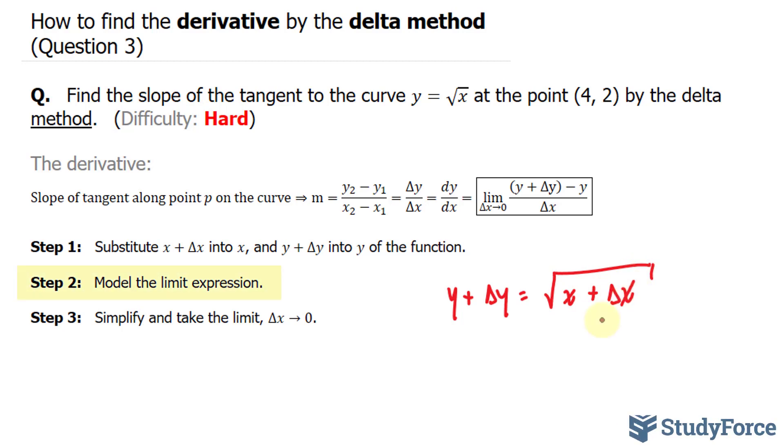In step 2, they want us to model the limit expression, and that's shown right here. The limit expression, namely the numerator part, we have y plus delta y, which is this, minus y.